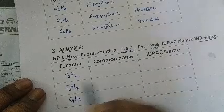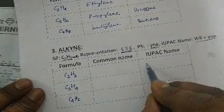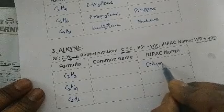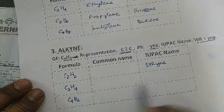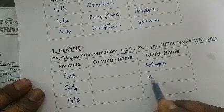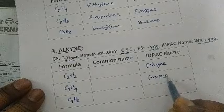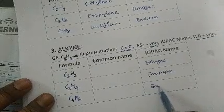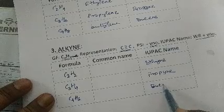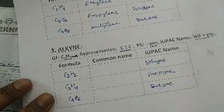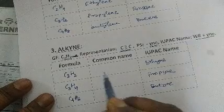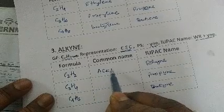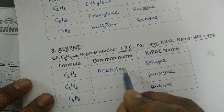For the IUPAC name of alkynes, the format is word root plus YNE. For two carbons, the word root is ETH, giving ethyne. For three carbons, it is propyne, and for four carbons, it is butyne. The common name for ethyne is acetylene.